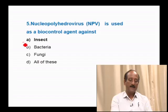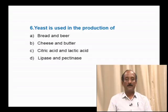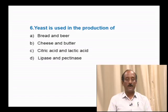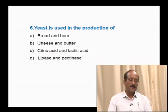Question number 6: Yeast is used in the production of — bread and beer; cheese and butter; citric acid and lactic acid; lipases and pectinases. Yeast is commonly used in bakeries for preparation of bread, where the porous nature of bread is due to carbon dioxide produced by yeast fermentation. In alcoholic beverages, beer is prepared by fermentation activity of yeast. The correct answer is option A.